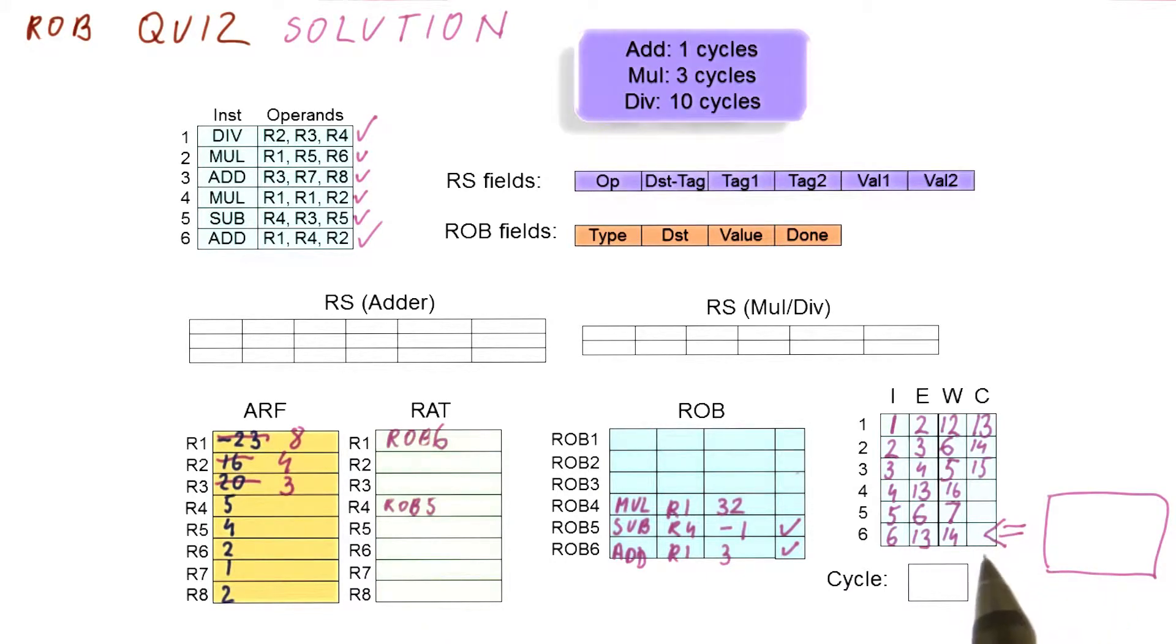Okay, so we have been asked, when will this instruction commit? We already know that this one will broadcast the result in cycle 16. That means it cannot commit in the next cycle.